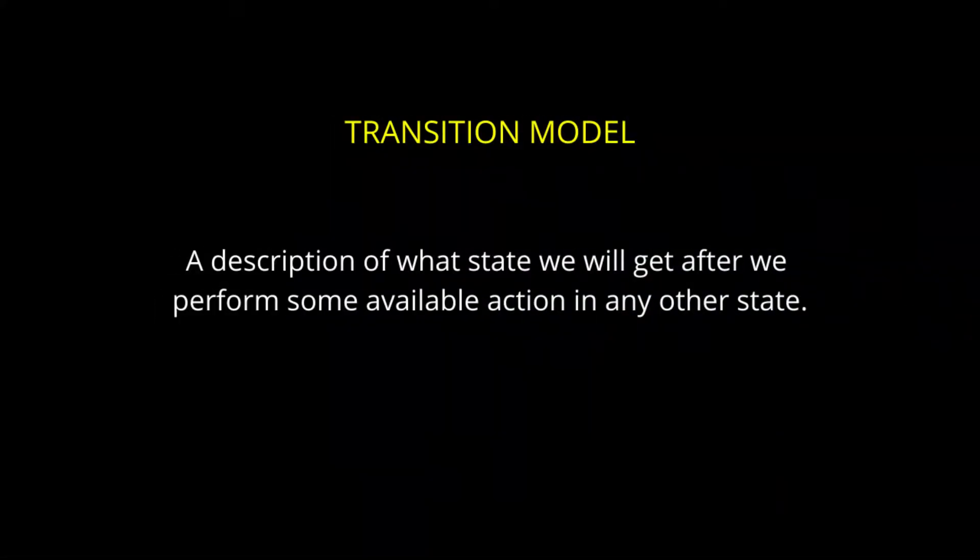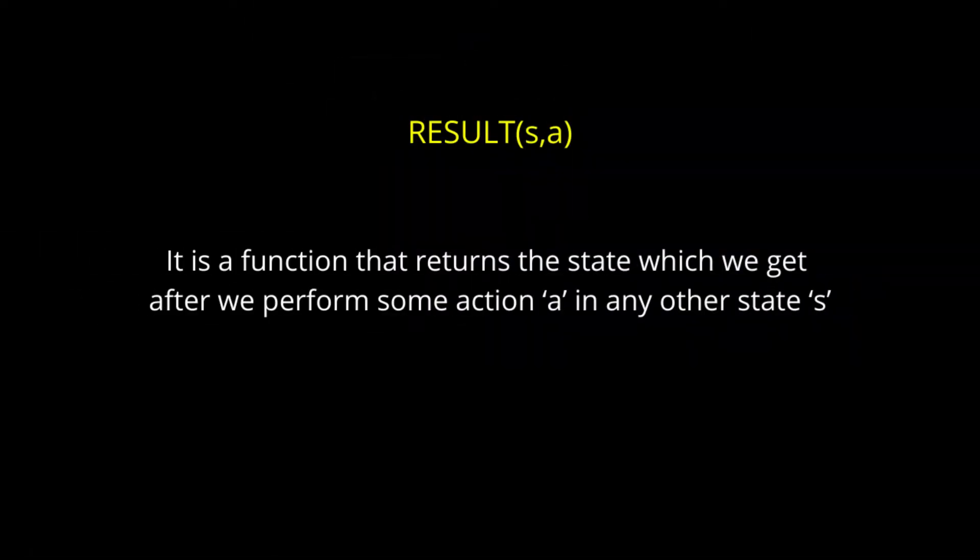The transition model is a description of what state we will get after we perform some available action in any other state. It is a function that returns the state which we get after we perform some action A in any other state S.